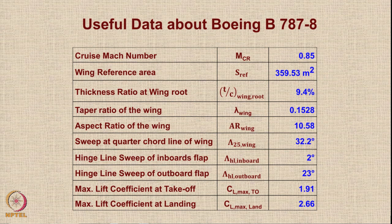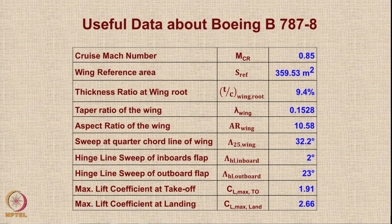Here is some useful data about Boeing B787-8 which we will use in this analysis. Notice that the bottom two entries in the table are the maximum lift coefficient at takeoff, CL max TO = 1.91, and the maximum lift coefficient at landing, CL max land = 2.66. These two values are the ones we are going to determine in this tutorial, and we will also compare the wing Oswald efficiency E.